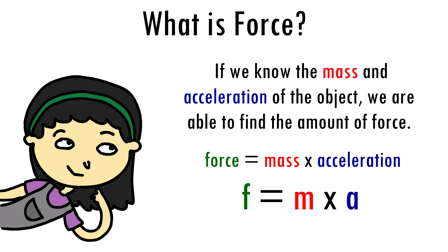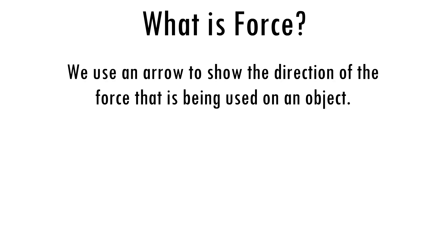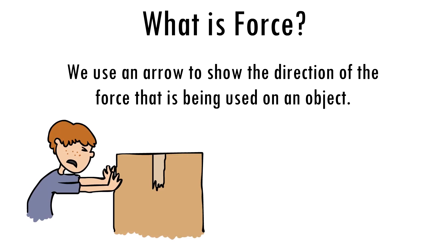When we find the force, the unit of measurement it uses will be in newtons. But what about direction? We use an arrow to show the direction of the force that is being used on an object. So if we are pushing this heavy box, we will have an arrow pointing to the right to show that the force is being acted on the box to move it to the right.